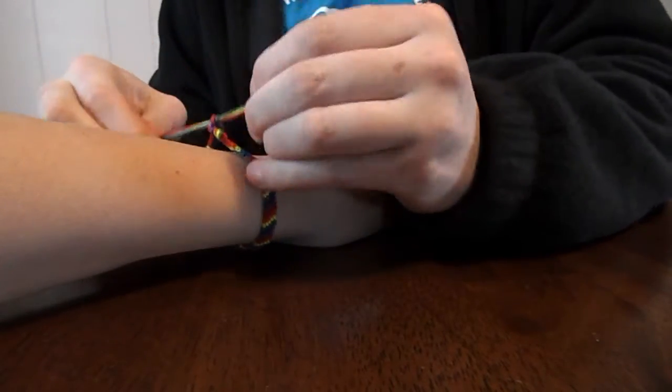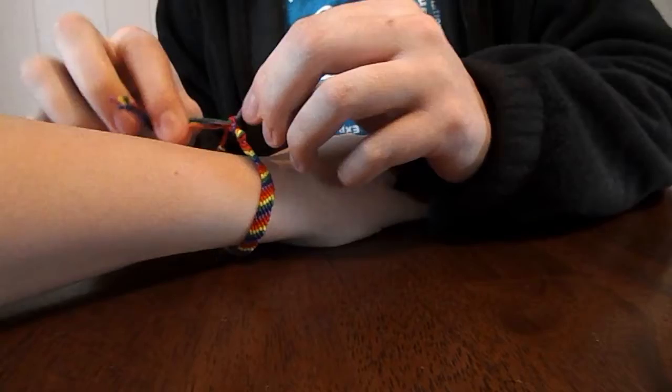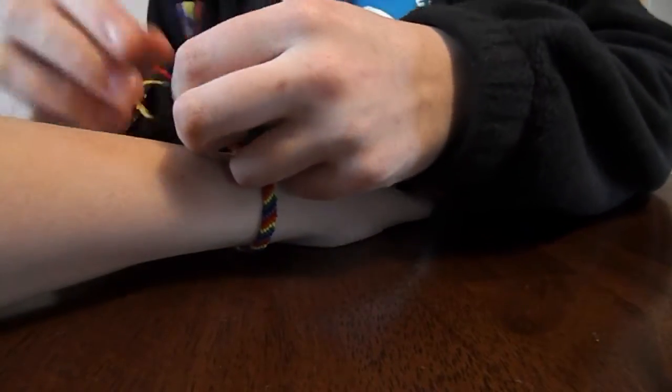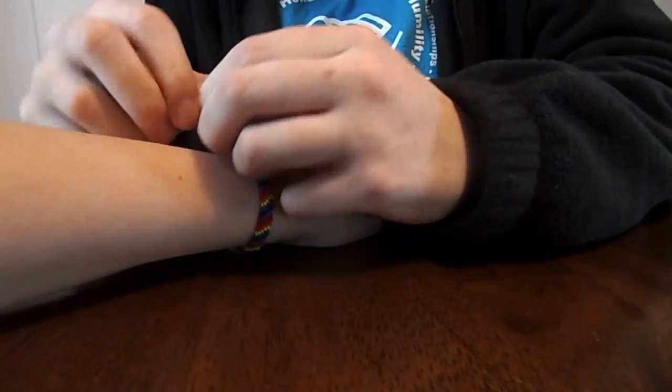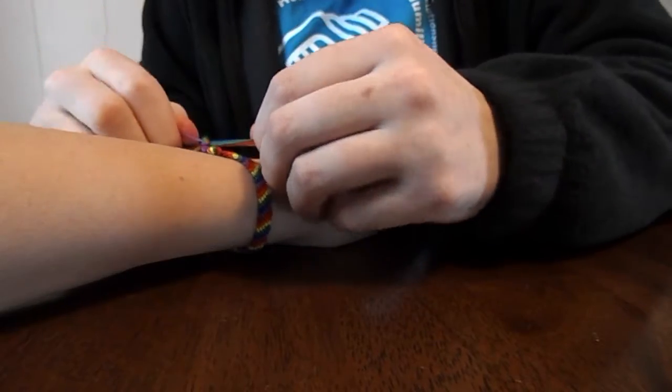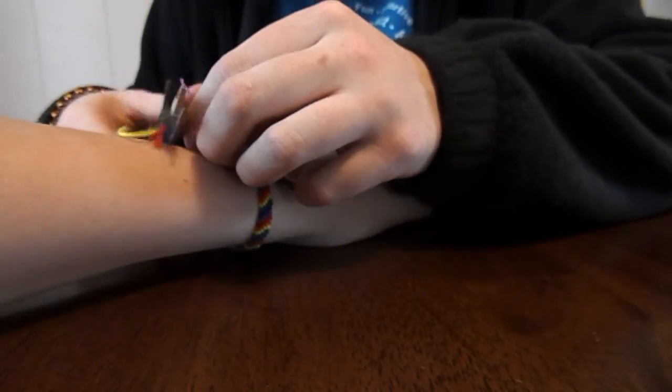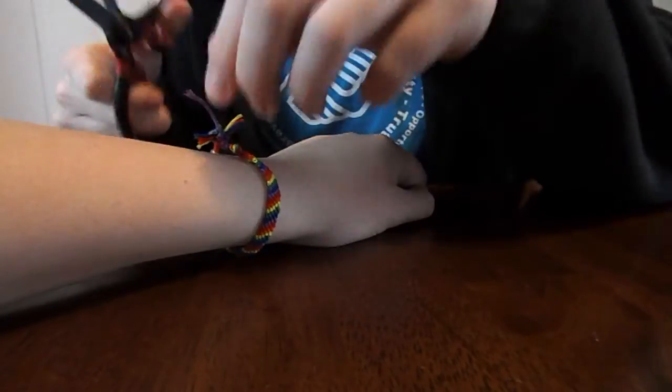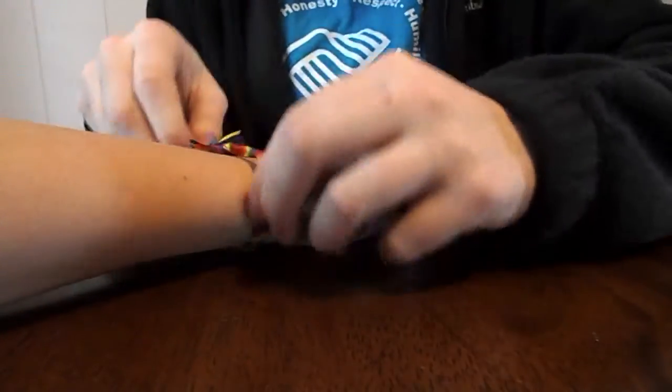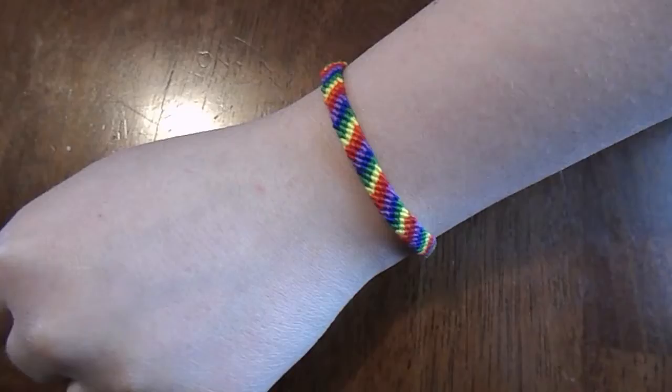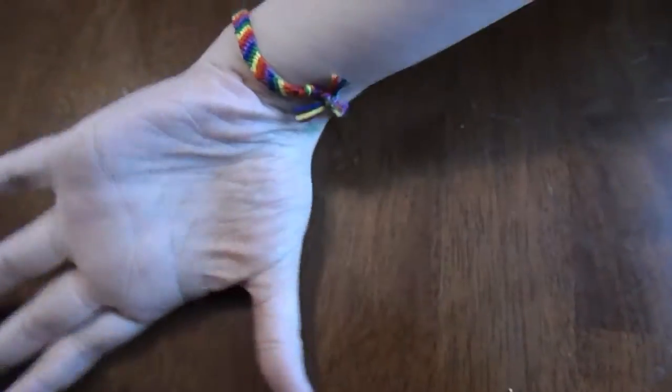I tied it twice so I know it would be secure on the person's arm and then again cut off the excess string. But be very careful and maybe have an adult do this step for you. But now we know how to create a beautiful friendship bracelet. Thank you guys so much for watching!